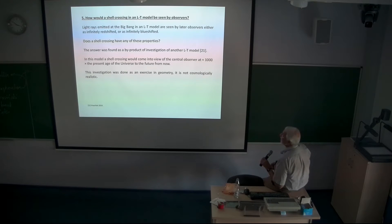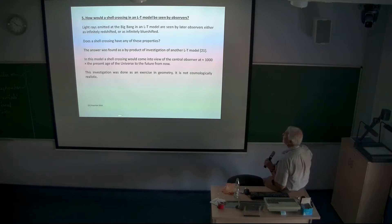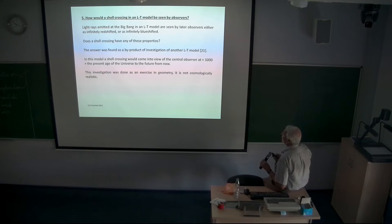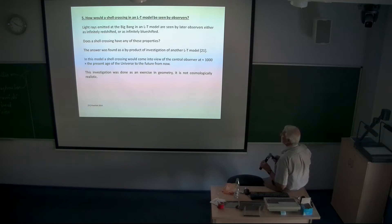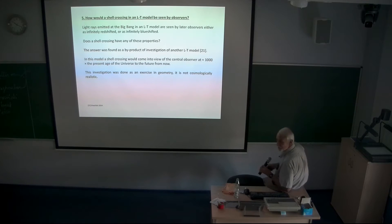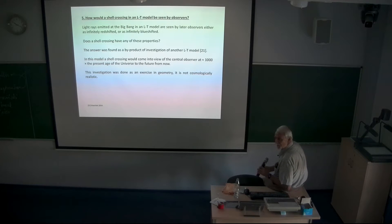Coming back to shell crossings: the question is how would a shell crossing in a Lemaître-Tolman model, if present, be seen by an observer? Light rays emitted at the Big Bang in this model are seen either as infinitely redshifted or infinitely blueshifted. A shell crossing is also a singularity — would it have either of these properties? The answer was found as a byproduct of investigating another Lemaître-Tolman model, in which a shell crossing would come into view of the central observer at about 1,000 times the present age of the universe. This is an exercise in geometry — not cosmologically realistic — but it gives inspiration for what to expect.